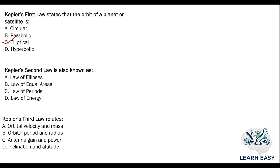Next question: Kepler's second law is also known as — option A: law of eclipse; option B: law of equal areas; option C: law of periods; option D: law of energy. The answer is option B — Kepler's second law is known as the law of equal areas.